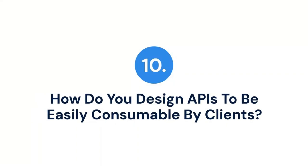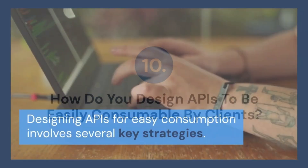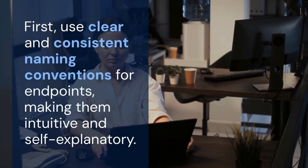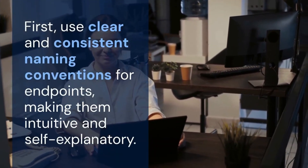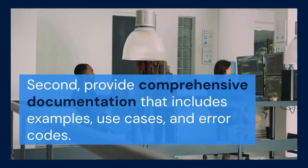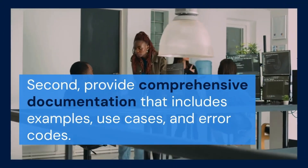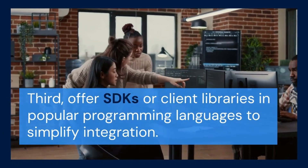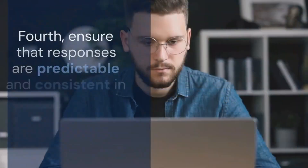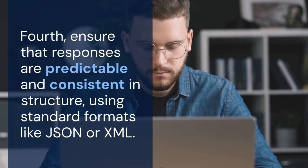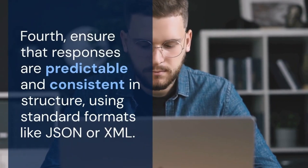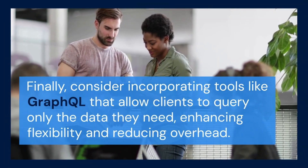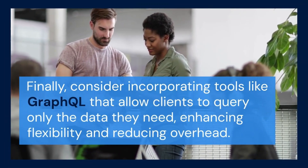10. How do you design APIs to be easily consumable by clients? Designing APIs for easy consumption involves several key strategies. First, use clear and consistent naming conventions for endpoints, making them intuitive and self-explanatory. Second, provide comprehensive documentation that includes examples, use cases, and error codes. Third, offer SDKs or client libraries in popular programming languages to simplify integration. Fourth, ensure that responses are predictable and consistent in structure, using standard formats like JSON or XML. Finally, consider incorporating tools like GraphQL that allow clients to query only the data they need, enhancing flexibility and reducing overhead.